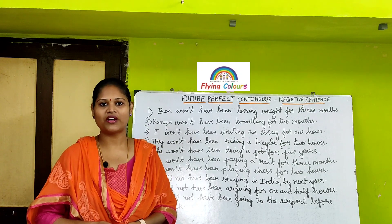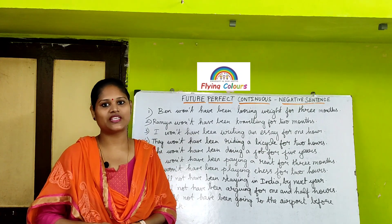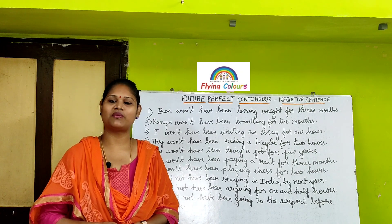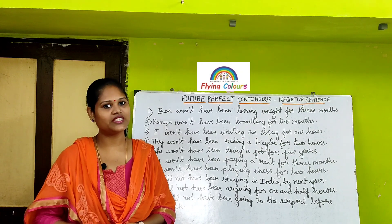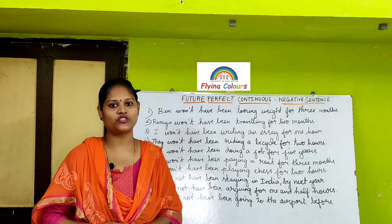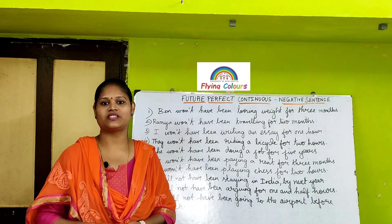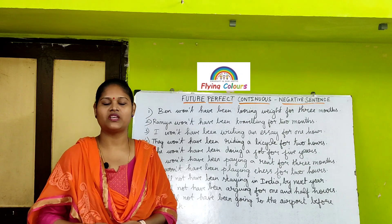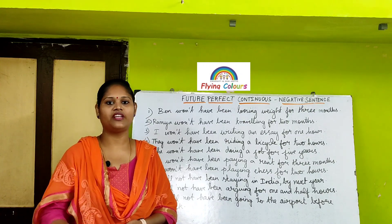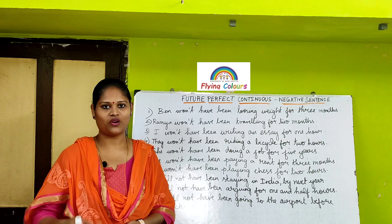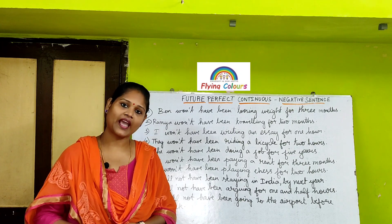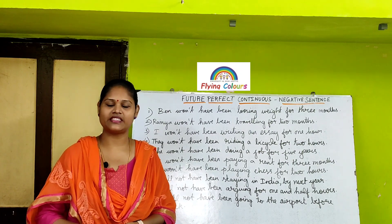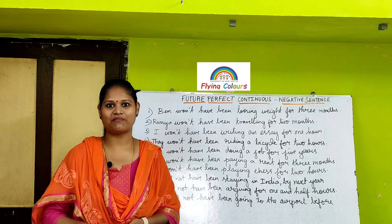The formula for future perfect continuous tense negative sentence is: subject plus will plus not plus have plus been plus present participle. Always in a continuous tense, present participle should come, and in a negative sentence, you need to write 'not' in between the helping verbs — after 'will' you can see 'not': will not. You can also use the short form 'won't' in sentences. Anything is okay.